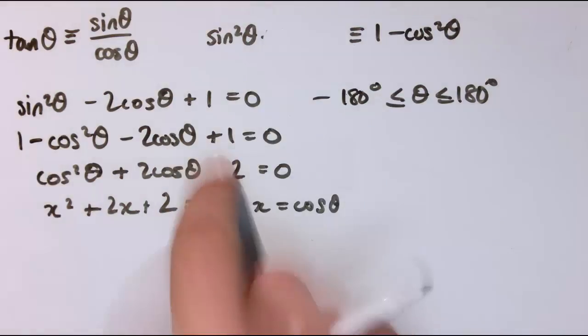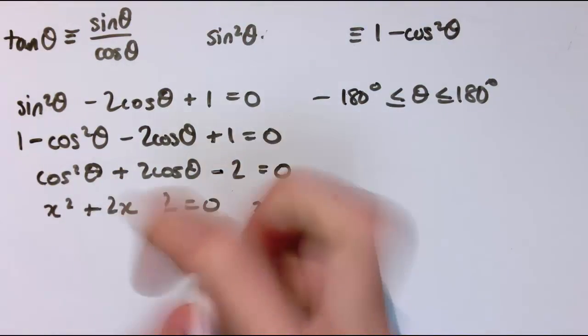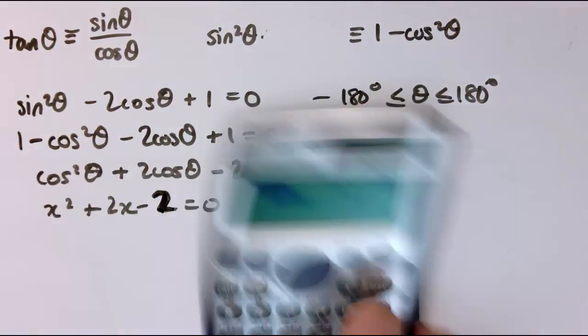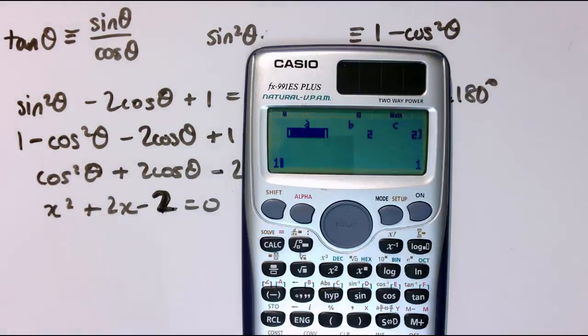then I actually just realized I made a mistake. 1 plus 1 is 2, so that should have been minus 2 here. Sorry about that. So otherwise, as you see, I was getting some odd answers on my calculator there, but I've got 1, 2, and minus 2.